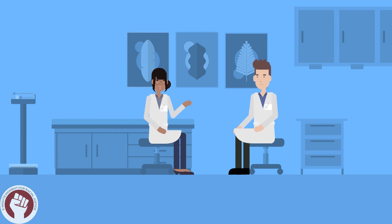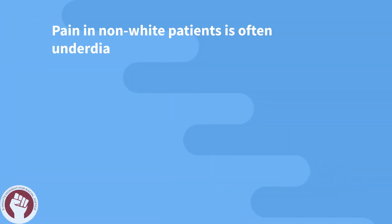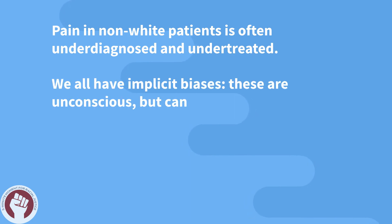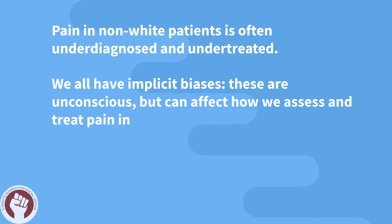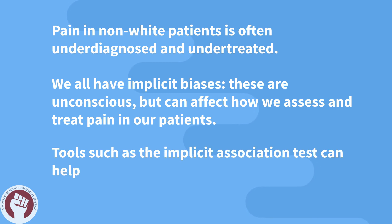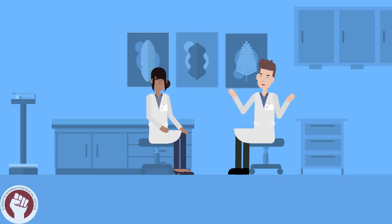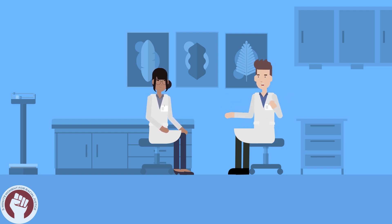So bringing this back to our patient with appendicitis — what should we do instead? From our discussion, what I learned is that pain in non-white patients is often underdiagnosed and undertreated. We all have implicit biases. These are unconscious, but can affect how we assess and treat pain in our patients. Tools such as the implicit association test can help us recognize our own biases and inform our practice in the future. Given that, I would recommend that we reassess our patient's pain and provide appropriate treatment until we safely deliver relief.